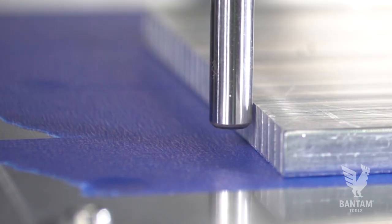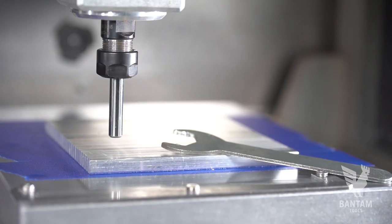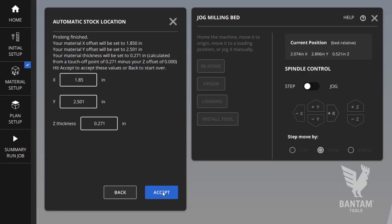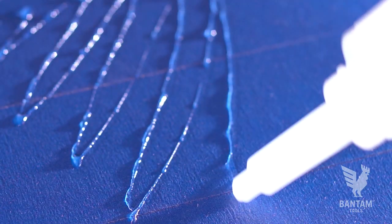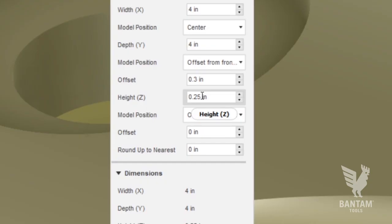Enter the stock dimensions and perform the conductive probing routine. The reported z-height will probably be greater than what you measured earlier. That's okay. In this setup, it includes the glue and tape thickness. The thickness you measured earlier will need to be entered into Fusion before generating the G-code for the project.